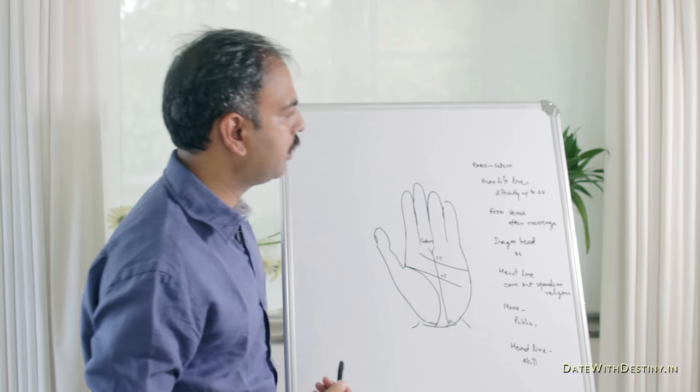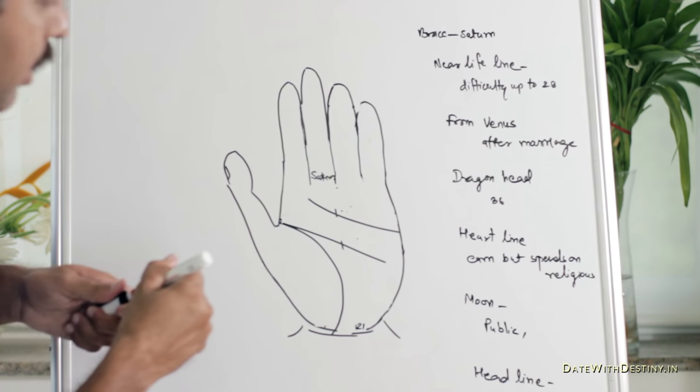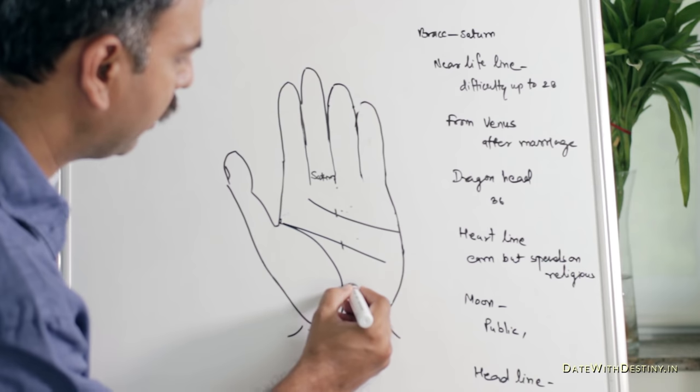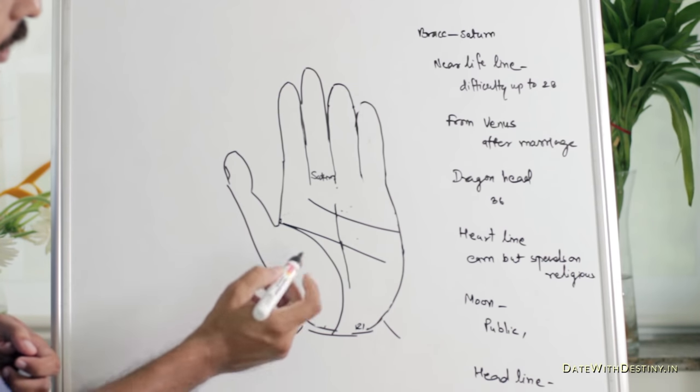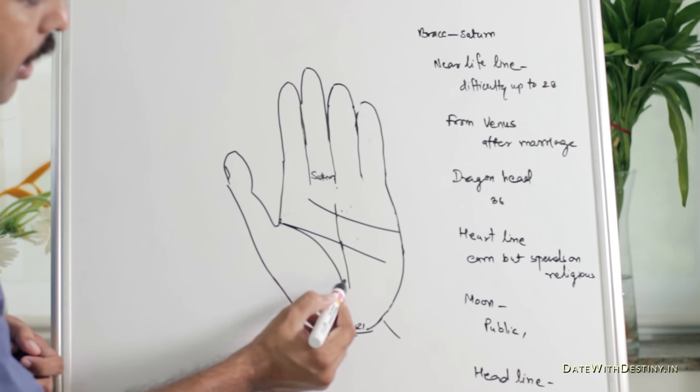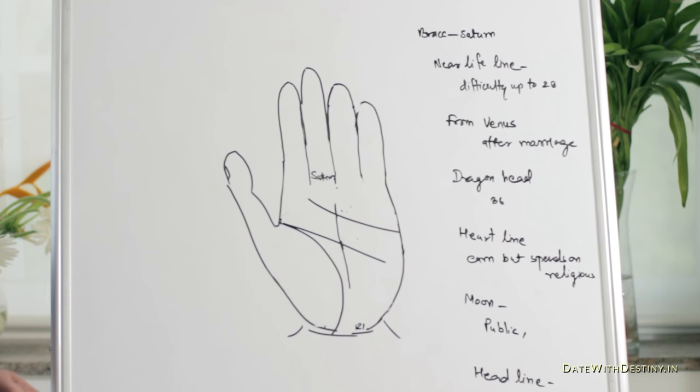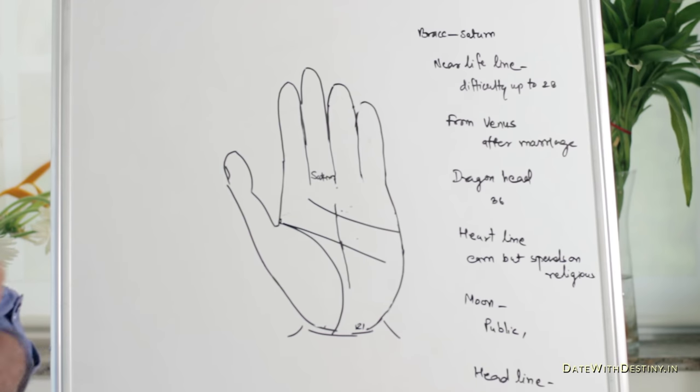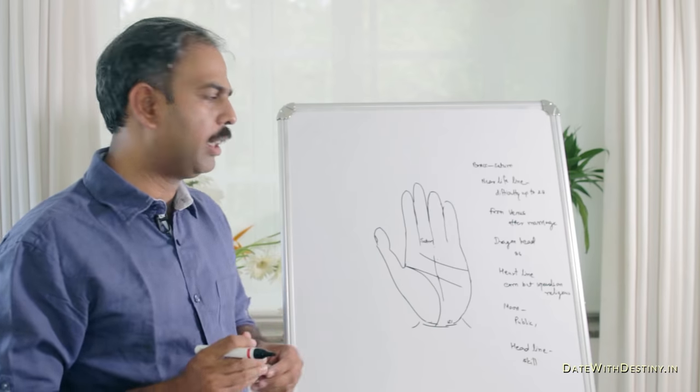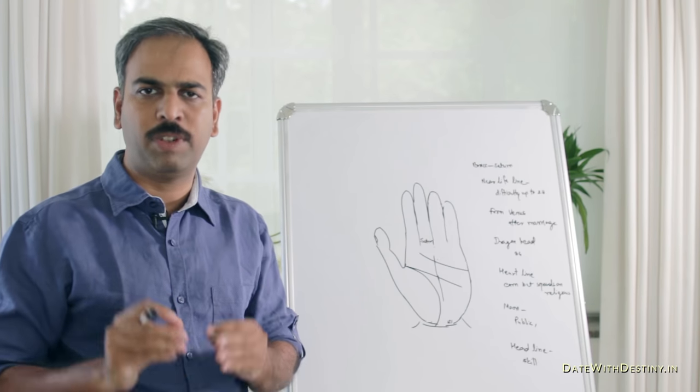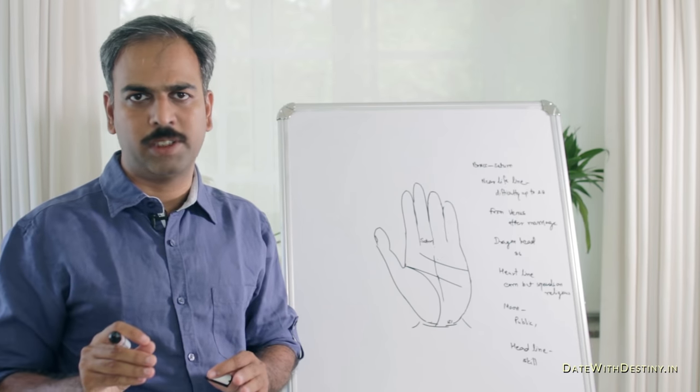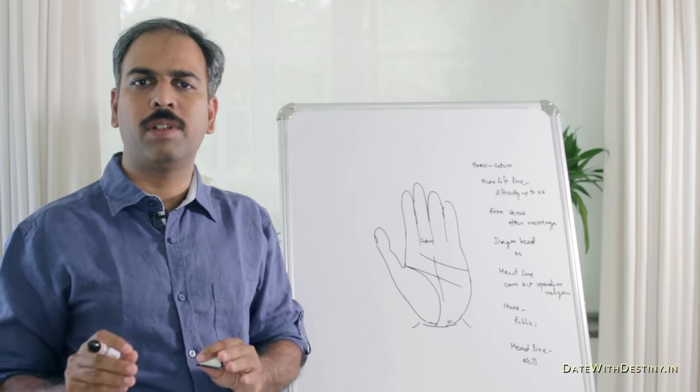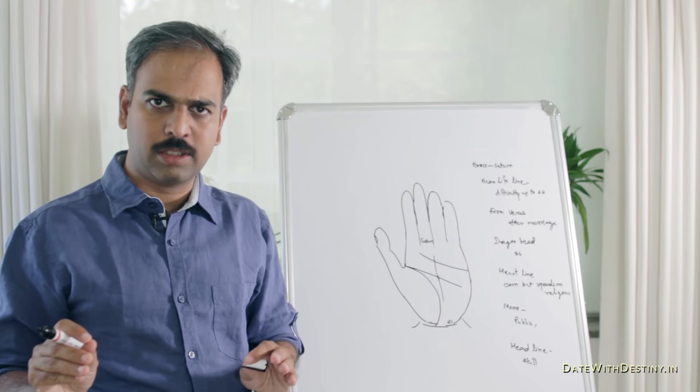The second line is, if the line starts from near the Lifeline. If it starts near the Lifeline and goes to the Mount of Saturn, obviously it is the destination point, then it indicates that the person will face a number of difficulties up to the age of 28. And afterwards, he will get success day by day.